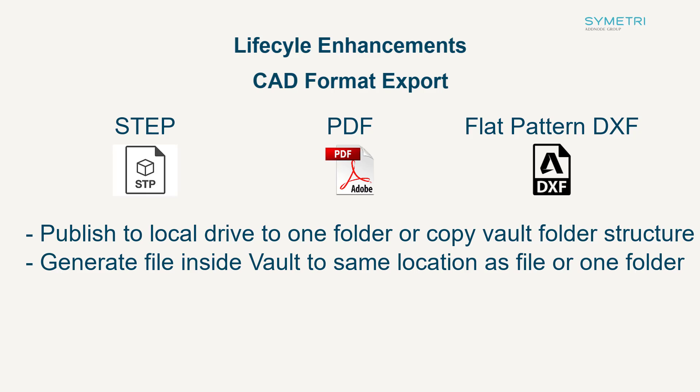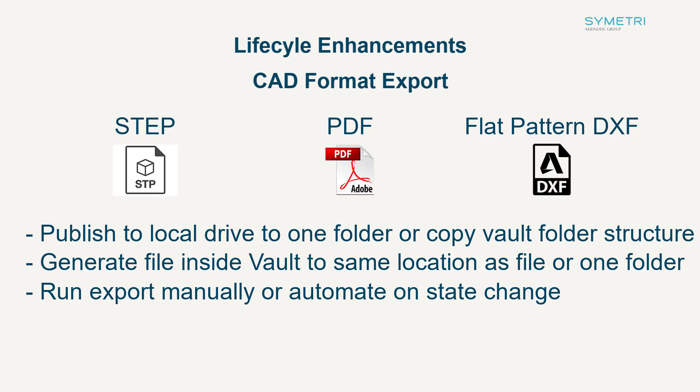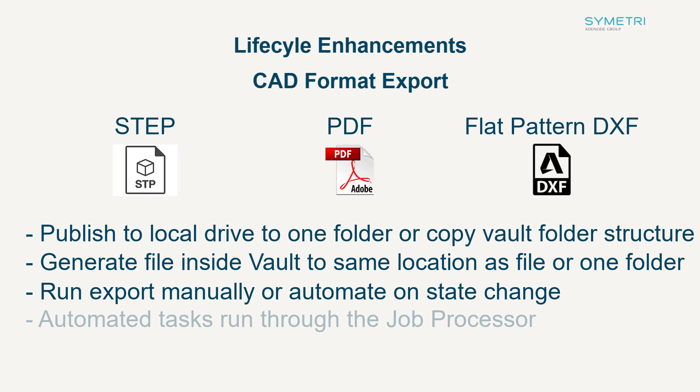The option also gives you the same outputs as before. You can choose to allow users to run this manually or to automate it through state change — for example, when moving to release state to generate all files of that type through the job processor. This is going to allow for improved consistency in the business, ensuring all necessary file exports are created.